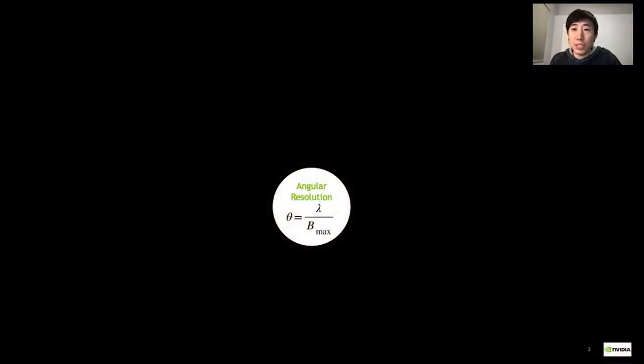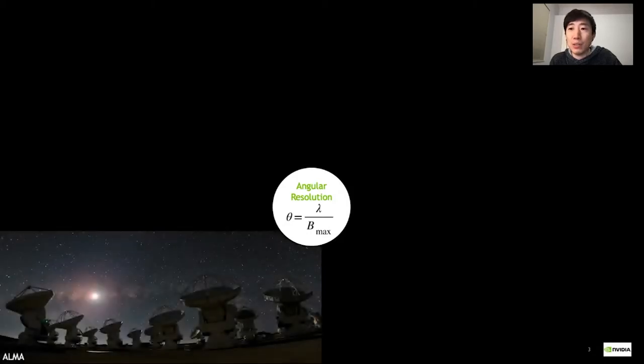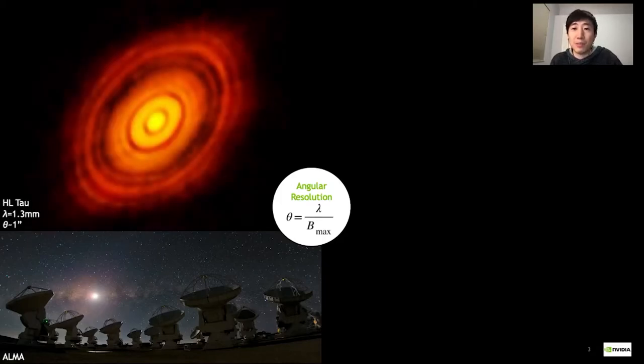The angular resolution from an interferometer can be higher than any other type of telescope and is determined by the wavelength and the maximum distance between two antennas in the array. For ALMA this is around 16 kilometers allowing us to observe objects such as planets forming around other stars.